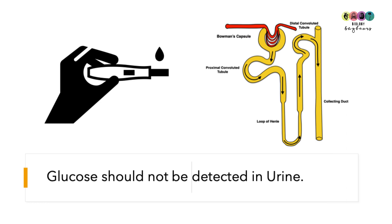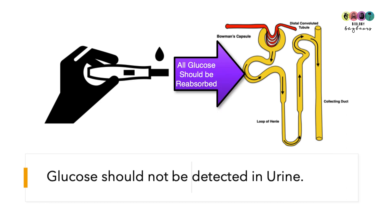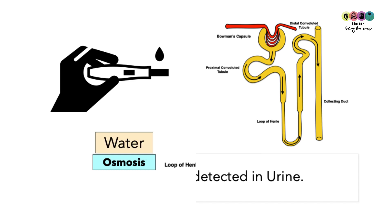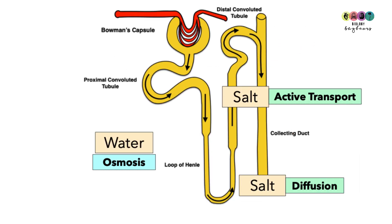Glucose should never be detected in your urine because 100% of glucose is reabsorbed at the proximal convoluted tubule. If glucose is present in urine, it can be a sign of diabetes. Once you understand what happens at the proximal convoluted tubule, you have covered most of reabsorption — the rest is fine tuning.